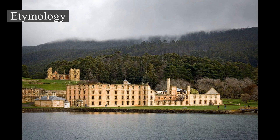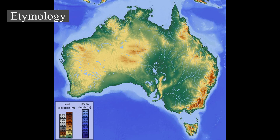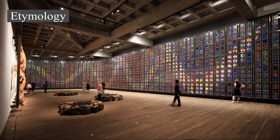The name Australia is derived from the Latin terra australis, meaning 'southern land,' a name used for a hypothetical continent in the southern hemisphere since ancient times. Several 16th-century cartographers used the word Australia on maps, but not to identify modern Australia. When Europeans first began visiting and mapping Australia in the 17th century, the name terra australis was naturally applied to the new territories. Until the early 19th century, Australia was best known as New Holland, a name first applied by Dutch explorer Abel Tasman in 1644. Terra australis still saw occasional usage, such as in scientific texts.